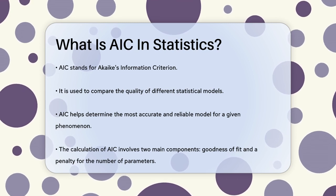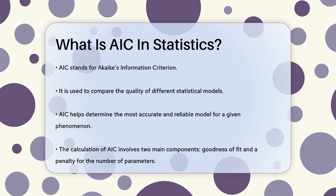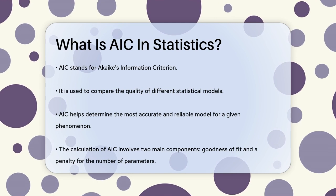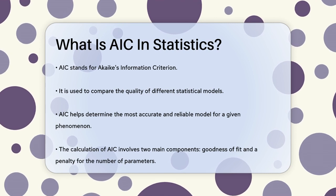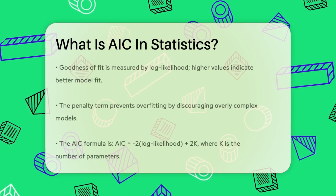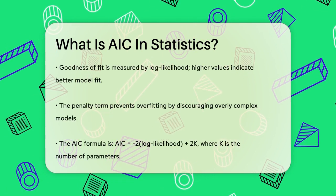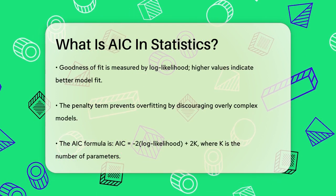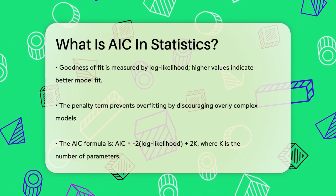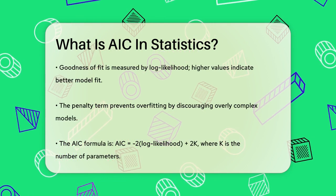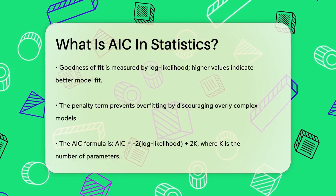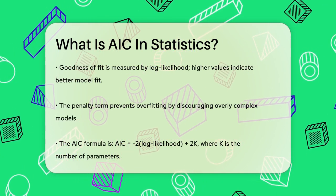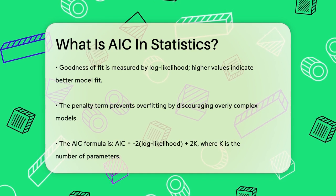Here's how it works. AIC calculates a score for each model based on two main components. The first is the model's goodness of fit, which is measured by the log likelihood — the higher the log likelihood, the better the model fits the data. However, AIC also includes a penalty term for the number of parameters in the model. This penalty term helps prevent overfitting, which happens when a model is too complex and fits the noise in the data rather than the underlying pattern.